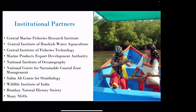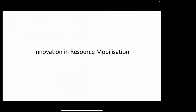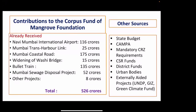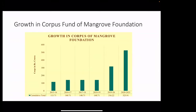We were supported by a number of institutions — central institutes like ICAR, marine fisheries, brackish water fisheries technology centers, marine products export development authority, Sálim Ali Centre for Ornithology and Natural History, the Wildlife Institute, BNHS, and many NGOs. The corpus fund of 526 crores was accumulated from different sources: the Navi Mumbai Airport project providing the initial 115 crores, plus state budget funds, CSR funds, district funds, urban body contributions, and two externally-aided projects including a UNDP project and a GIZ project. Now the Green Climate Fund is also supporting us.